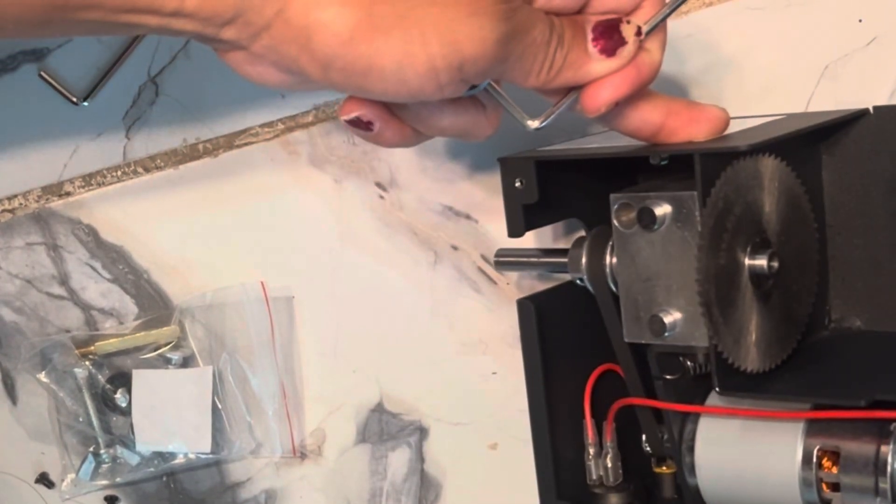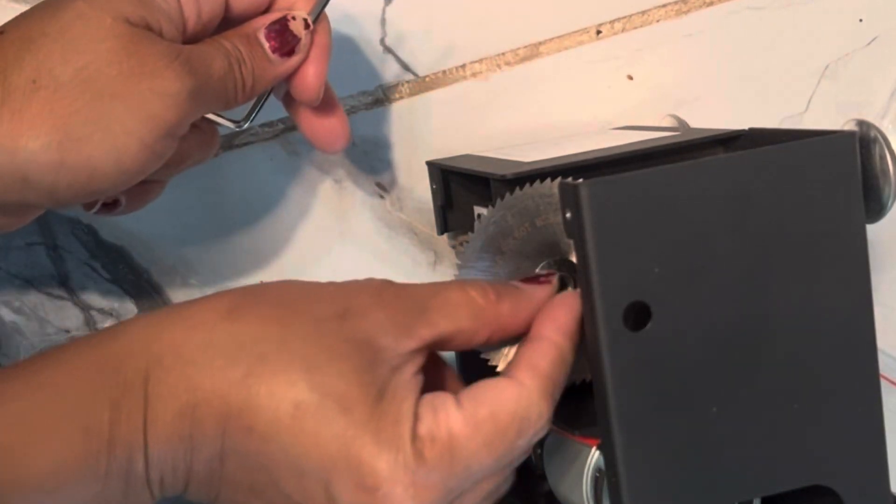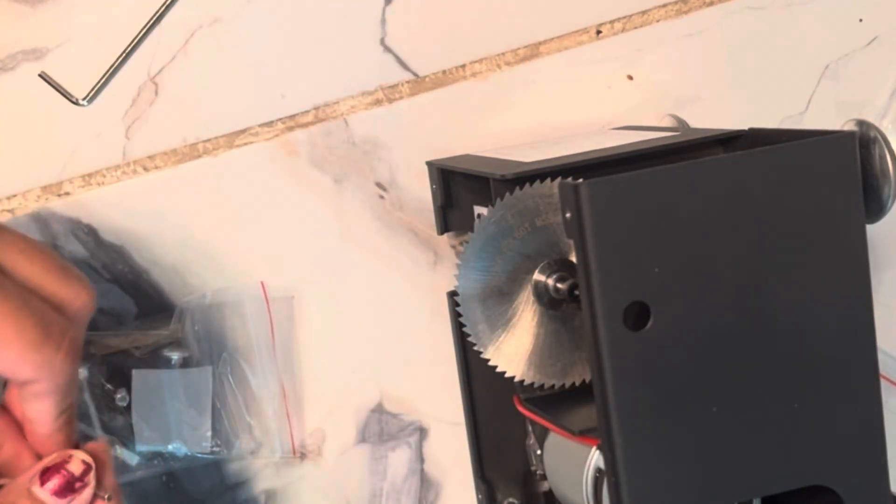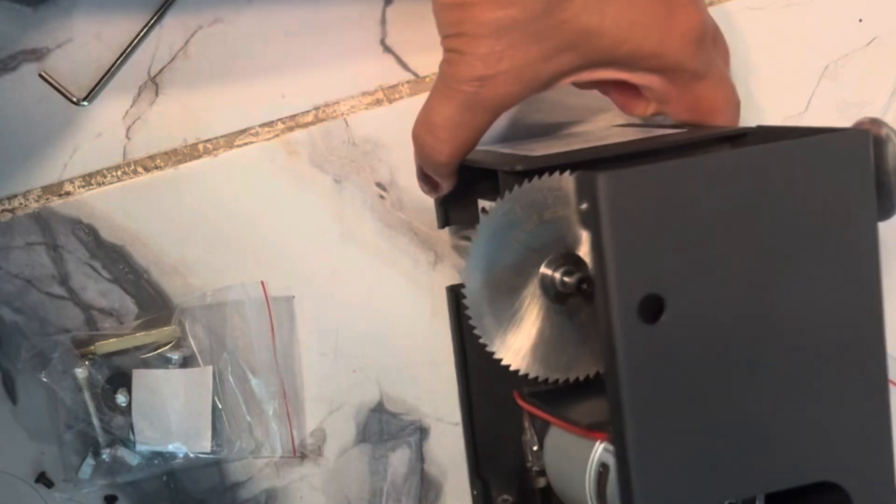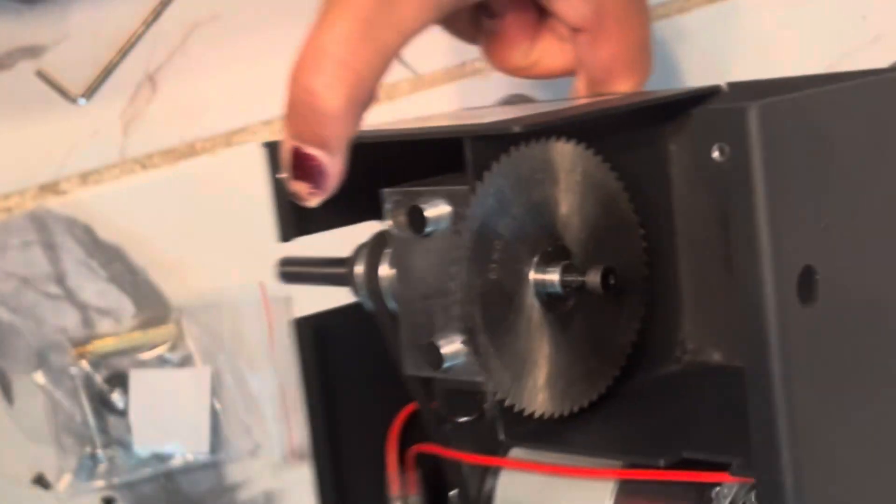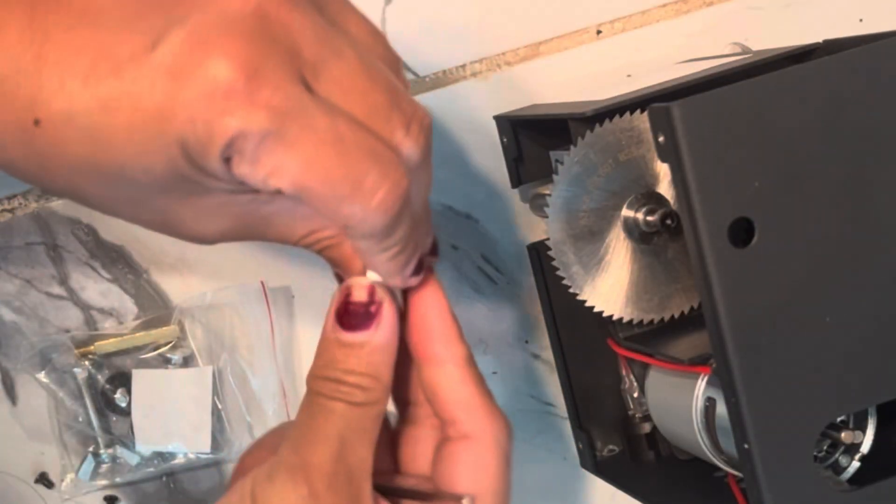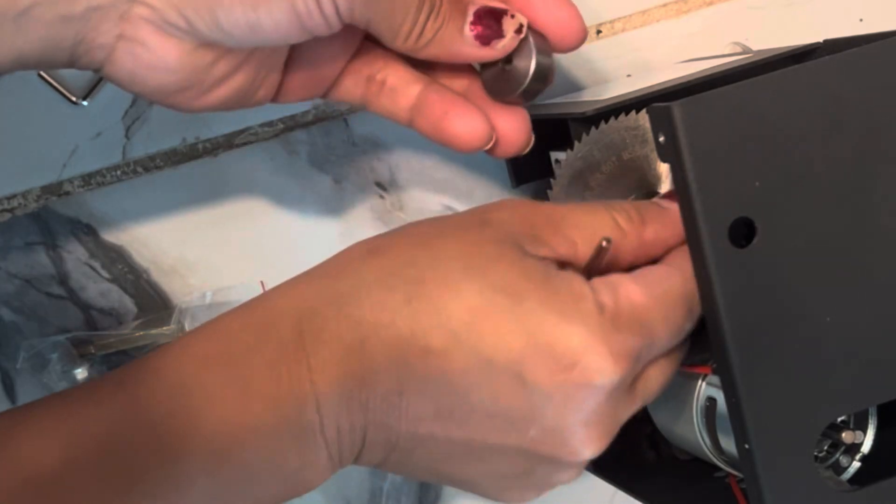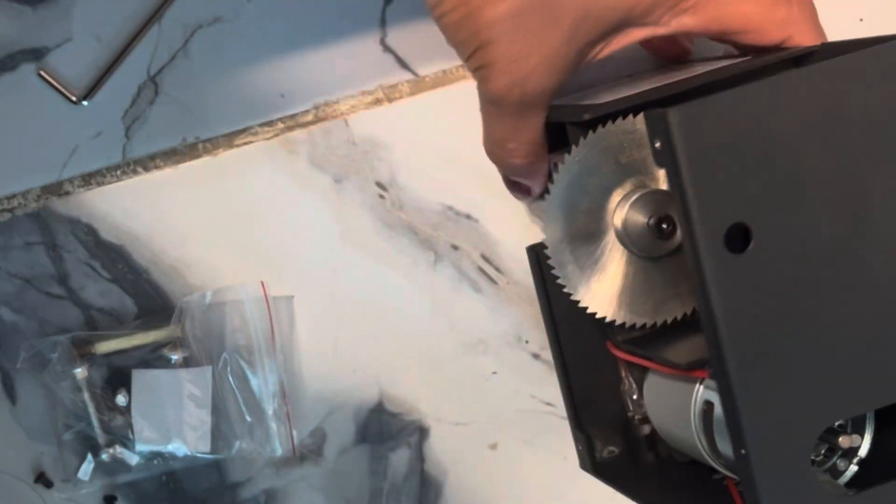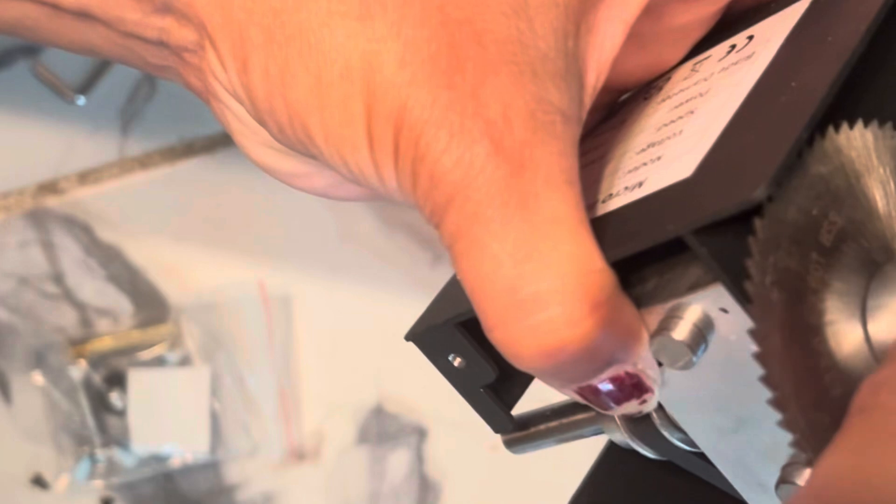Just place the blade clamp back in and then you can use the allen wrench to tighten the screw for the blade clamp. This is the most important part. You don't want the blade to be loose.